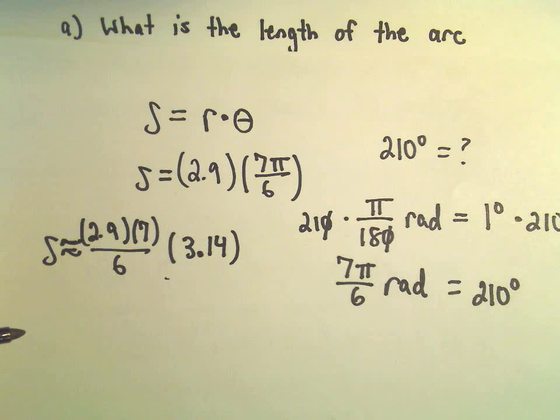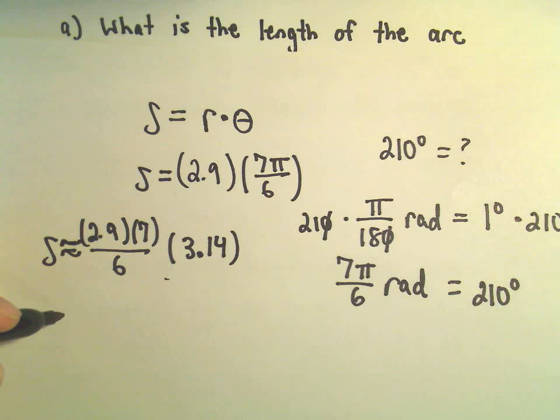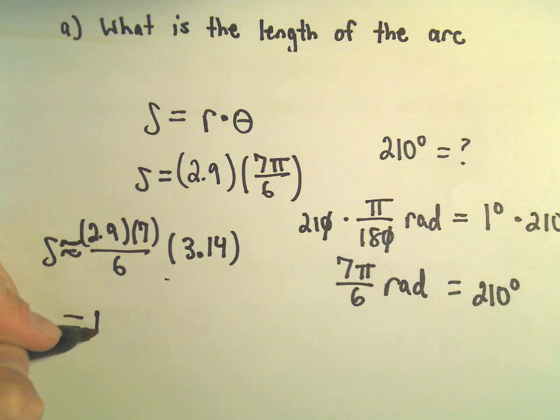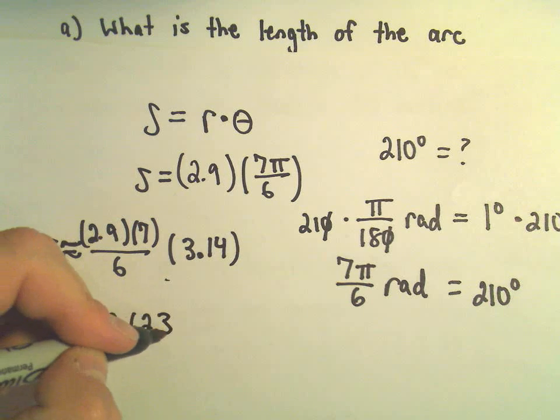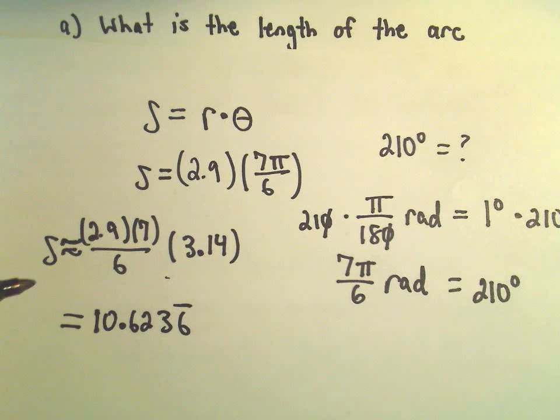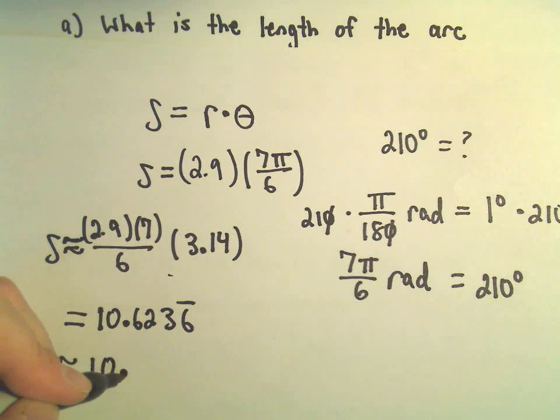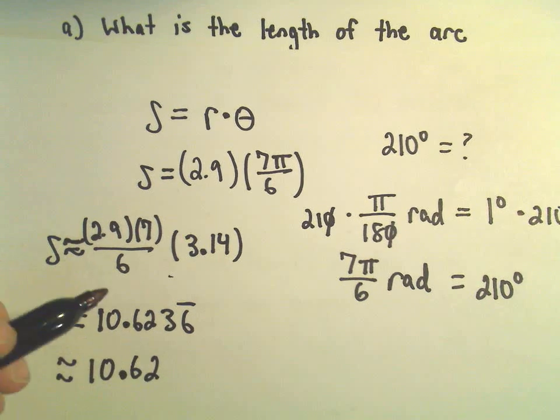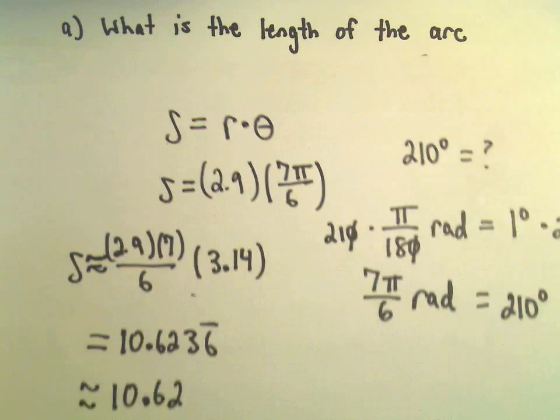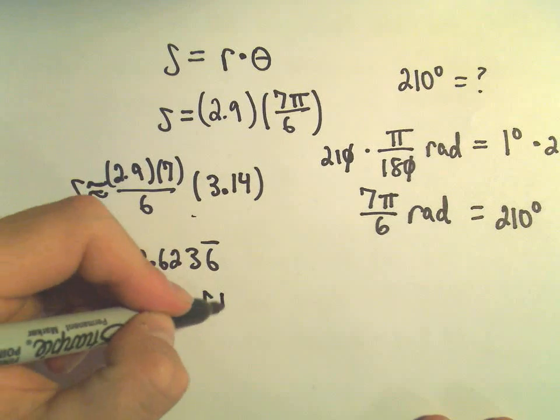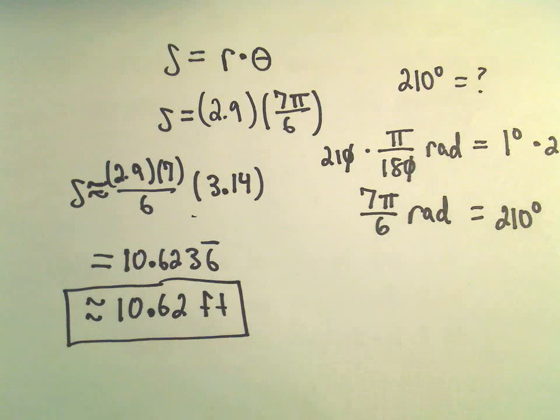So let's see, so 2.9 times 7 times 3.14 divided by 6, I am getting this to be, we'll round off, let's see, this is roughly 10.6236 repeating, that's exactly what it is. So let's round this off again, I'm going to say roughly 10.62, and again, we were talking about feet at the very beginning, yes, so I would say approximately equal to 10.62 feet would be the length of that intercepted arc.